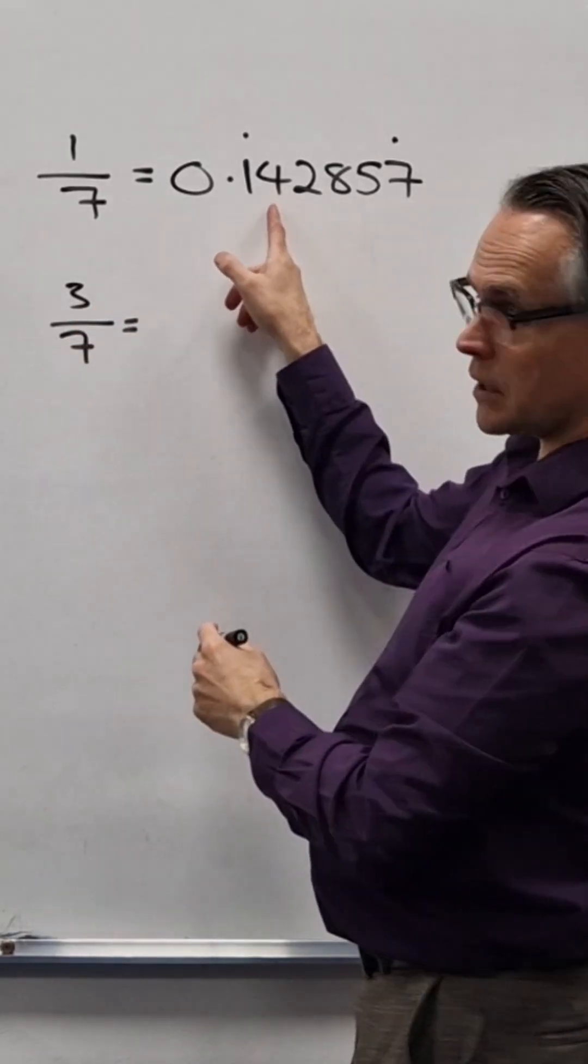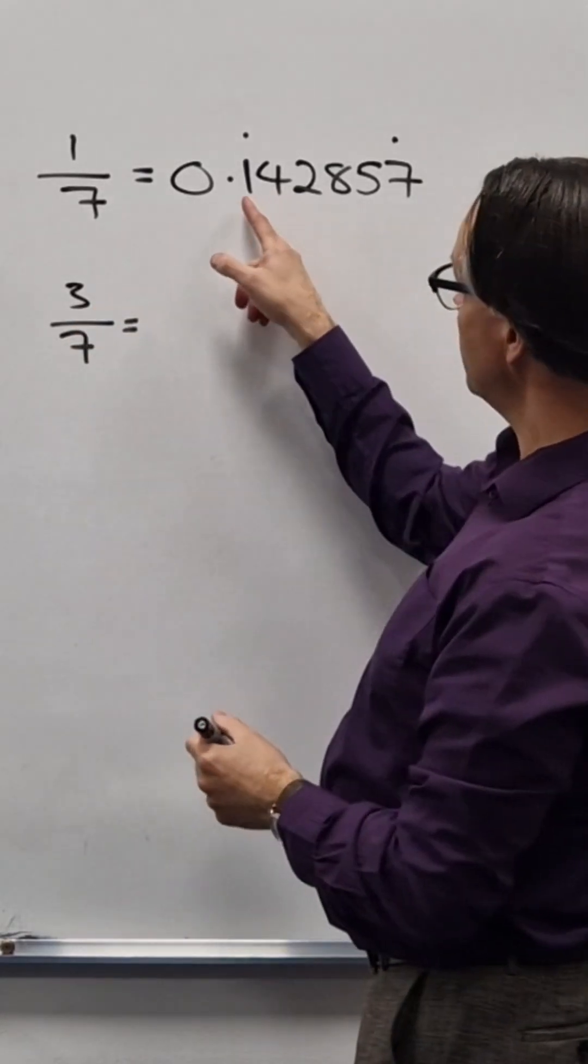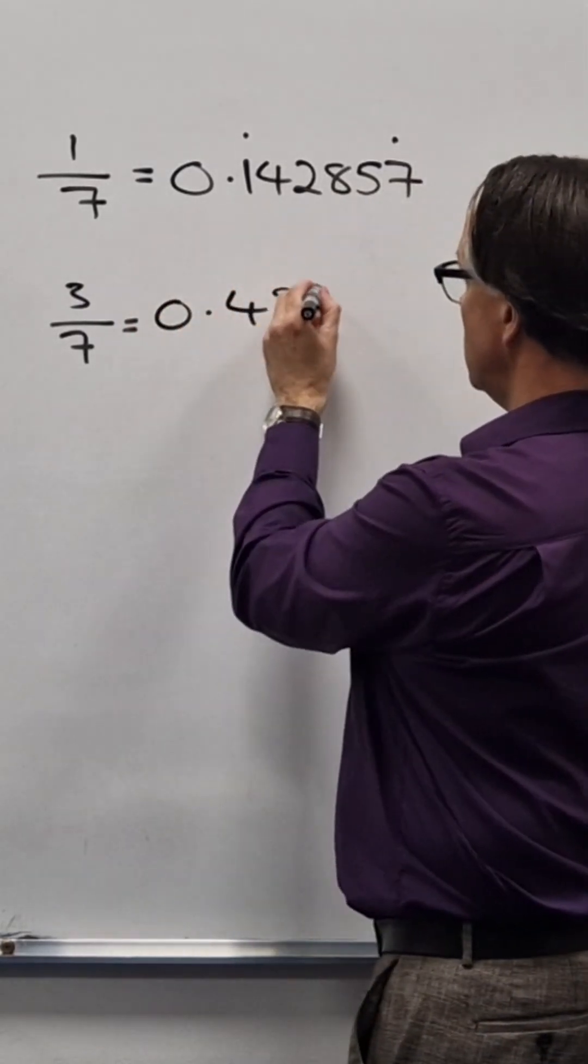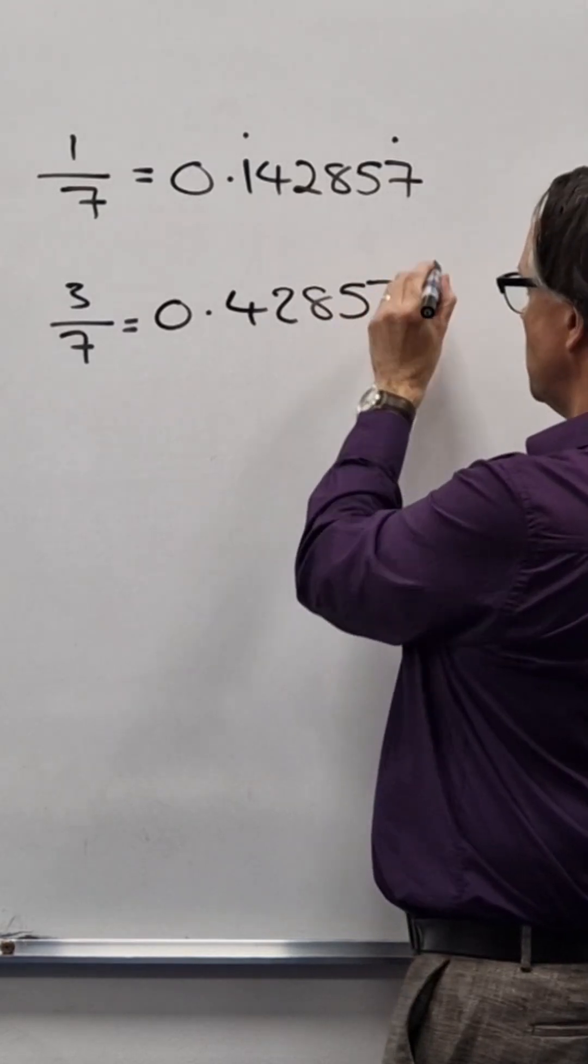So I just do the same thing but I start from here. So instead of one, four, two, eight, five, seven, it's four, two, eight, five, seven, one.